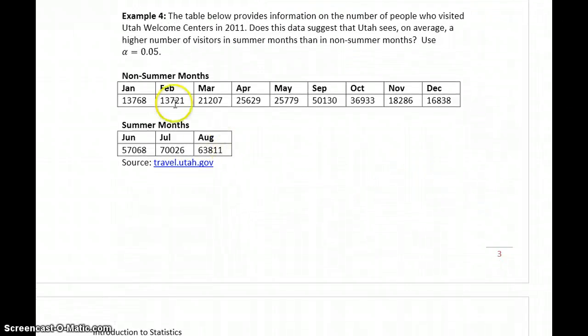In example four, we're looking at our information on Utah Visitor Center. The number of people who attended Utah Welcome Centers. So again, you would want to assess normality. In this case, we would conclude that both data sets come from normally distributed populations.